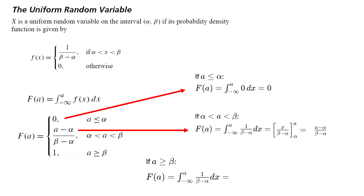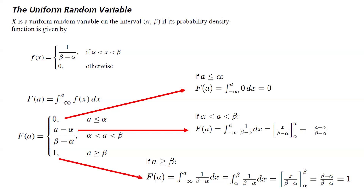On the last interval, if a is greater than or equal to beta, F of a is the integral from negative infinity to a of 1 over beta minus alpha dx, which equals the definite integral of 1 over beta minus alpha dx with x bounded between alpha and beta. This gives x over beta minus alpha evaluated from alpha to beta, so we get beta minus alpha divided by beta minus alpha, which equals 1. That is how you calculate the CDF for a uniform random variable.